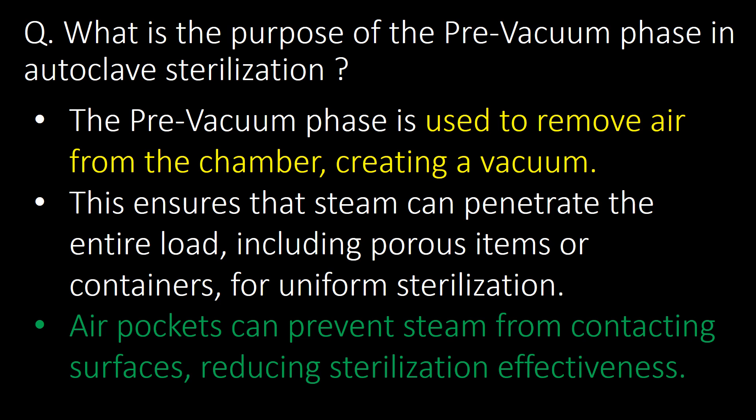Important question: what is the purpose of the pre-vacuum phase in autoclave sterilization? The pre-vacuum phase is used to remove air from the chamber, creating a vacuum. This ensures that steam can penetrate the entire load, including porous items or containers, for uniform sterilization. Air pockets can prevent steam from contacting surfaces, reducing sterilization effectiveness.